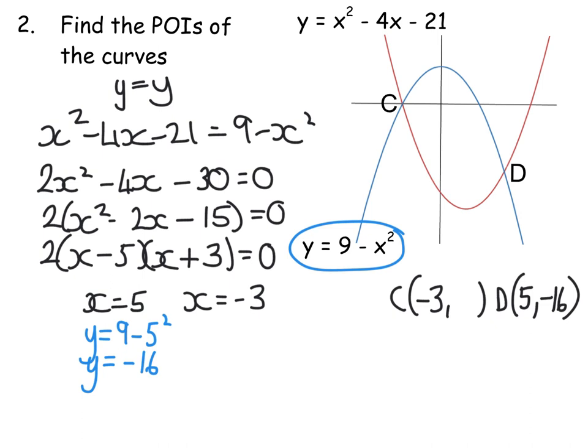And then we'll do the same again for the minus 3. So it's going to be y equals 9 minus negative 3 squared, which is just 9 minus 9, which is 0, as it matches the picture. So C is negative 3, 0. So they are my two points of intersection.